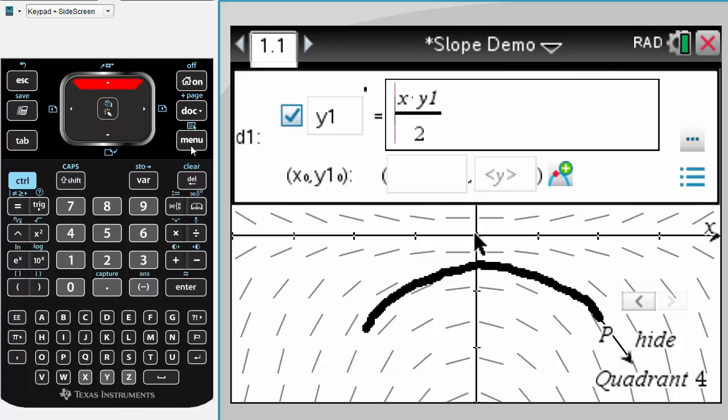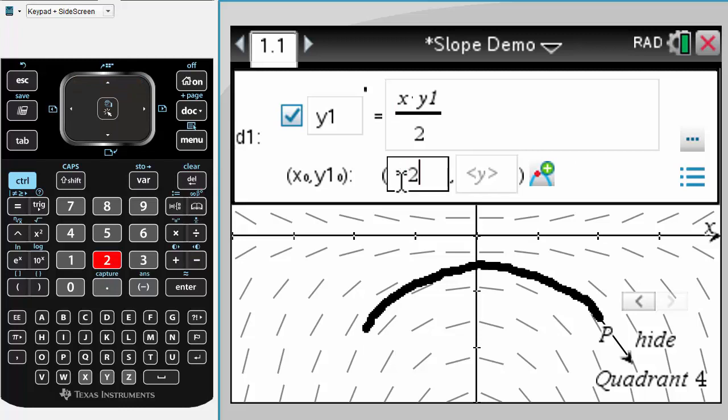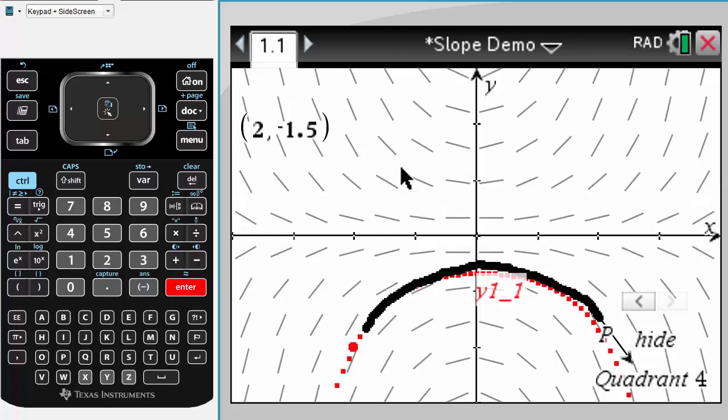So here we see the equation, the product of my x and y coordinates divided by 2. If I want to put in some initial conditions, and I think I started somewhere about minus 2 and minus 2, you can see a dotted line that's produced indicating the path of our point with initial conditions negative 2, negative 2.